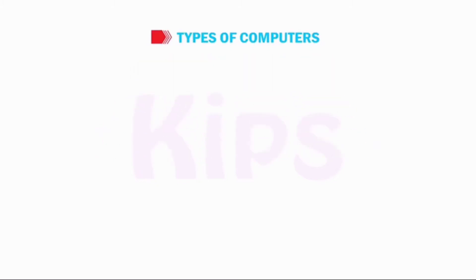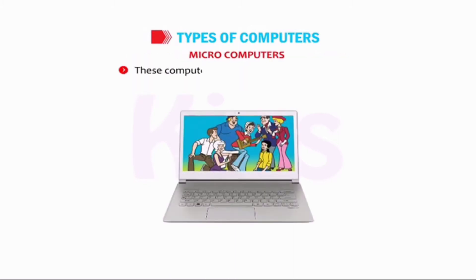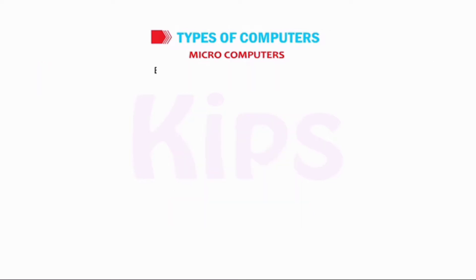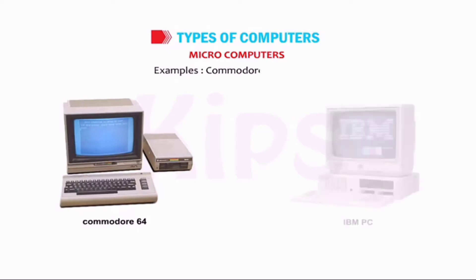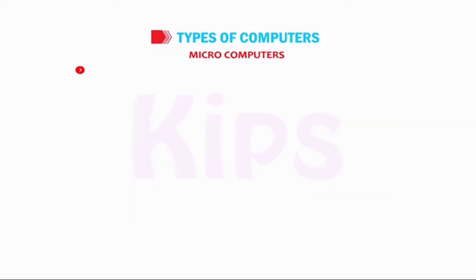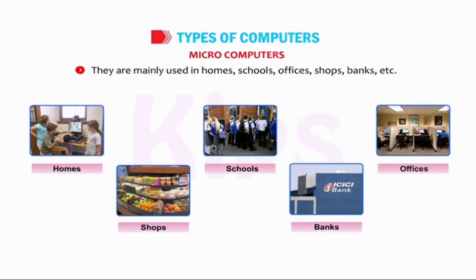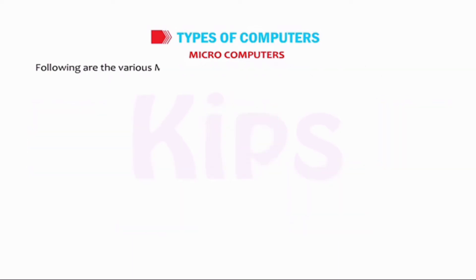Let us discuss the different types of computers. Microcomputers: these computers are small in size and cost less. They are usually designed for personal use, therefore they are also called personal computers or PCs. Examples include Commodore 64 and IBM PC. They are mainly used in homes, schools, offices, shops, banks, etc. Following are the various microcomputers that are given different names according to their usage.